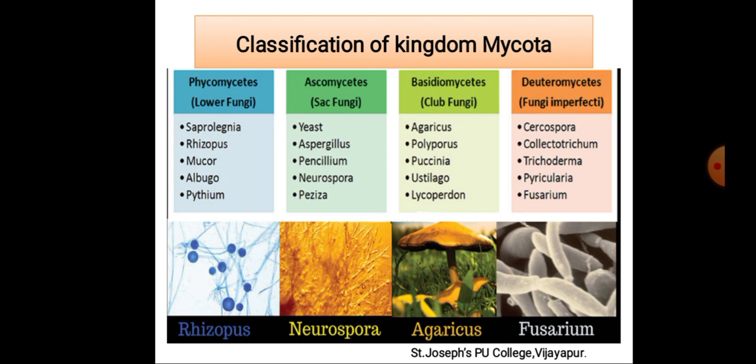In Deuteromycetes, you can see examples like Cercospora, Colletotrichum, Trichoderma, Piricularia, and Fusarium.